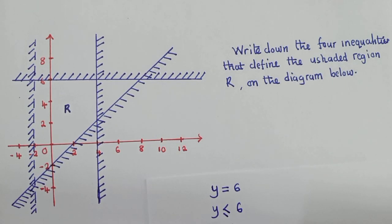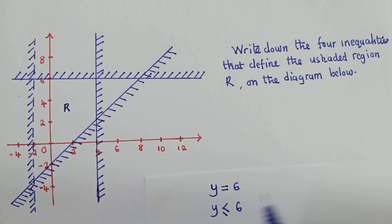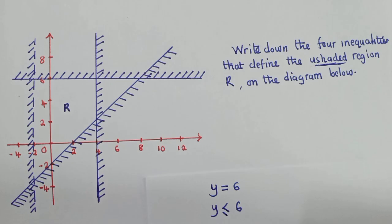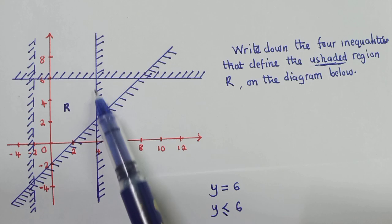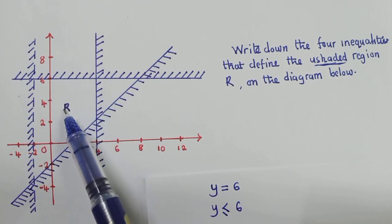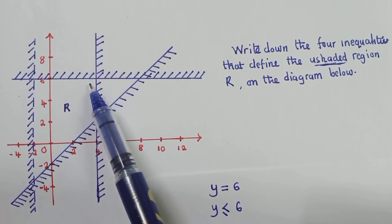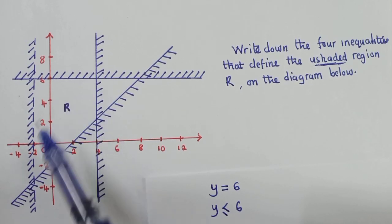You may be wondering why I haven't used 'greater than.' Most people make mistakes here. We're talking about the unshaded region. The unshaded region is the downward part — where R is shown at the bottom. The less-than part is what is not shaded, so the inequality is y ≤ 6.